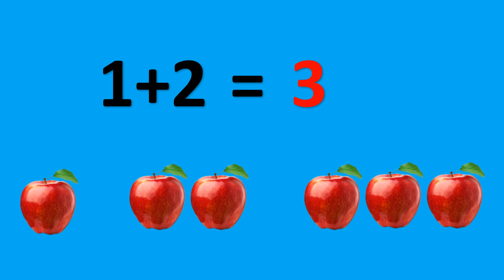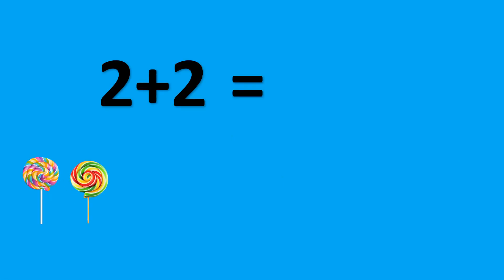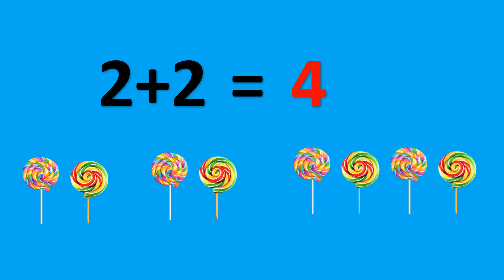2 plus 2. There are 2 lollipops. Let's add 2 lollipops. Let's count the lollipops together: 1, 2, 3, and 4 lollipops. So, 2 plus 2 equals 4.